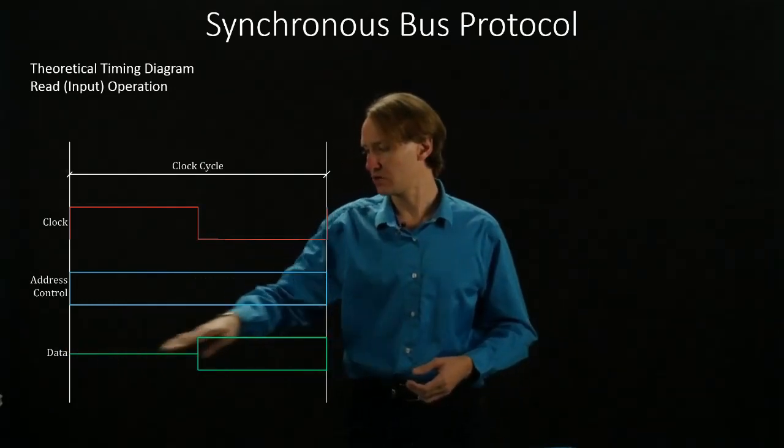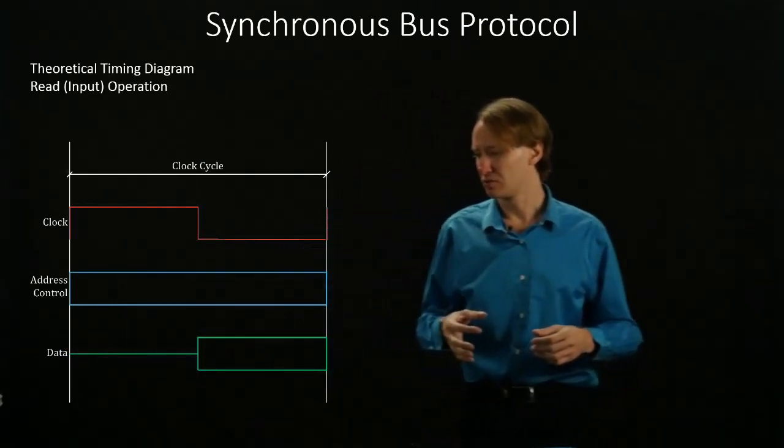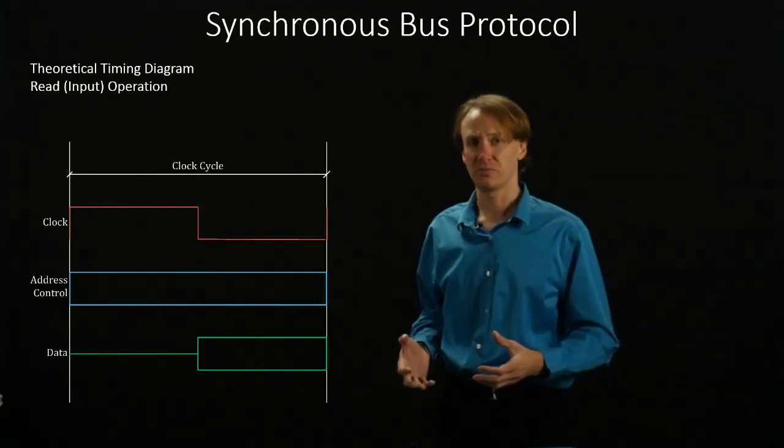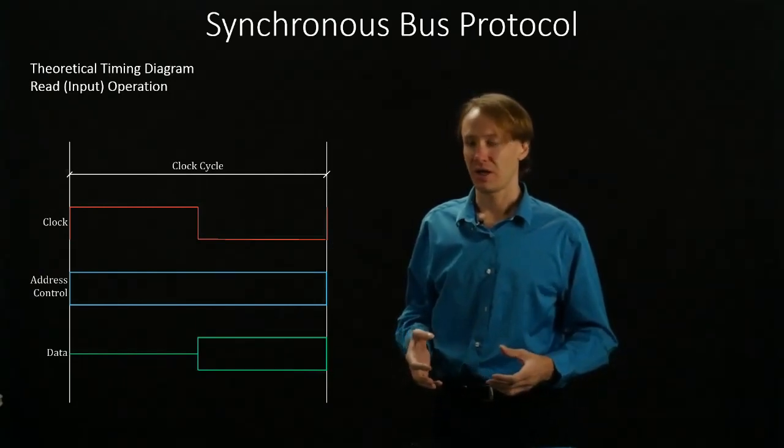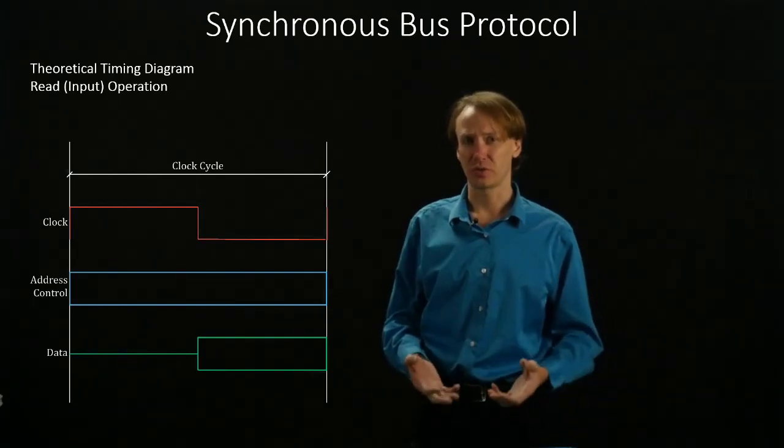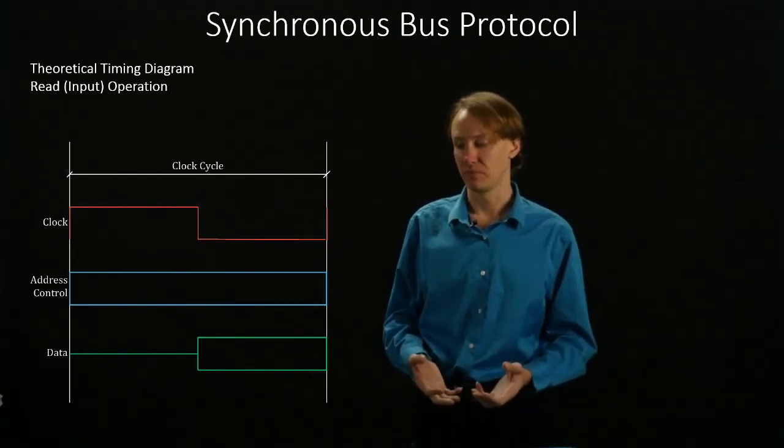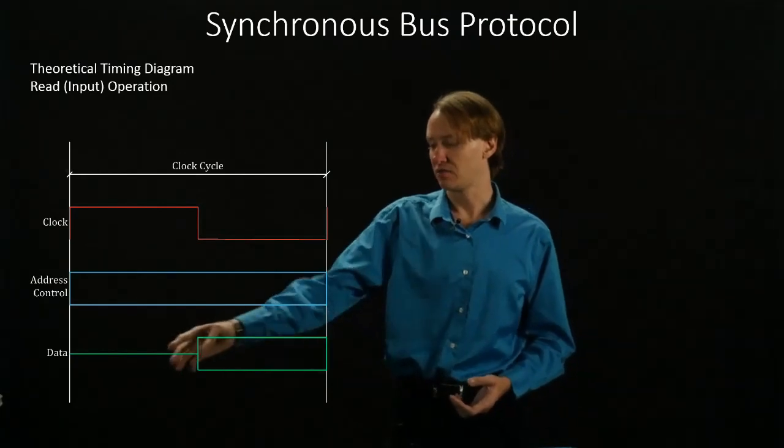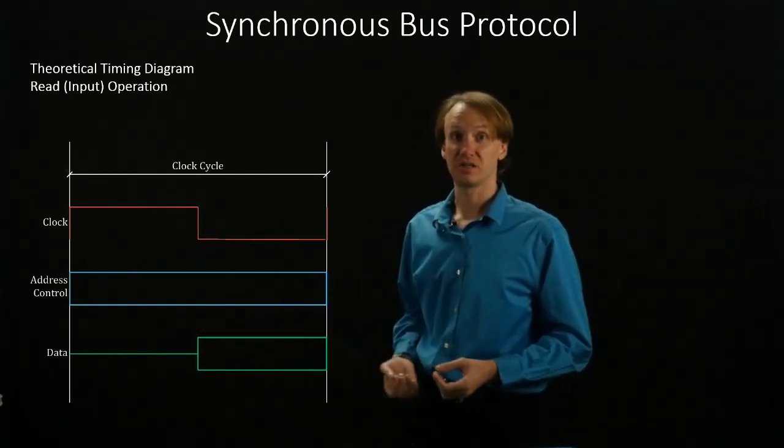So this line down the middle indicates that we really don't have useful information on the bus at the moment. As always, there's something there, but it's just not useful for the computation that we're interested in. We're really interested in this data, and the slave device has not had a chance to place it on the bus yet.